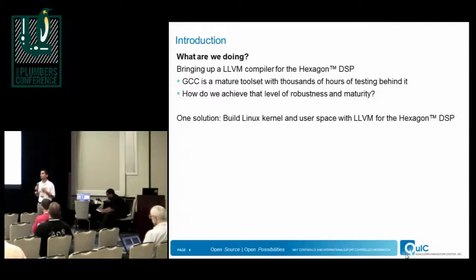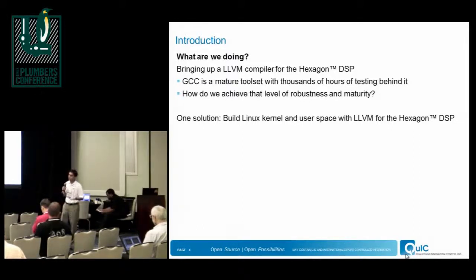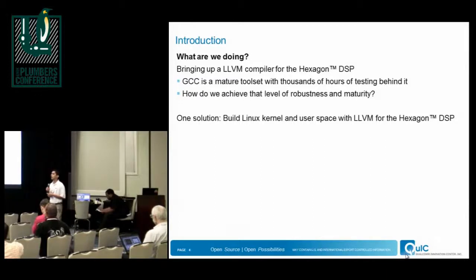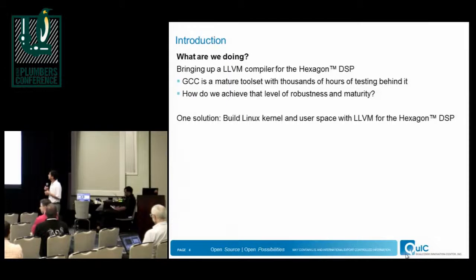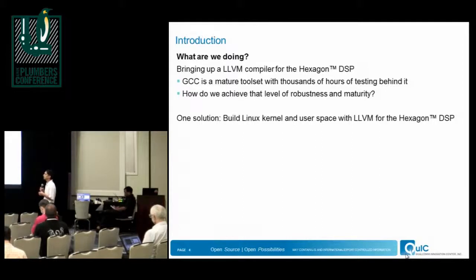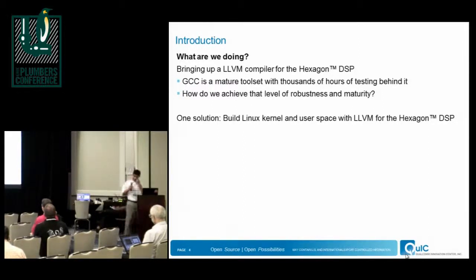We do the standard things a good compiler team should: we run hundreds of thousands of tests every night to ensure we don't regress on robustness, correctness, performance, and code size. But one big solution for us is to use the Linux kernel and user space as a large code base, running our LLVM compiler and downstream tools through it to identify correctness bugs and corner cases.